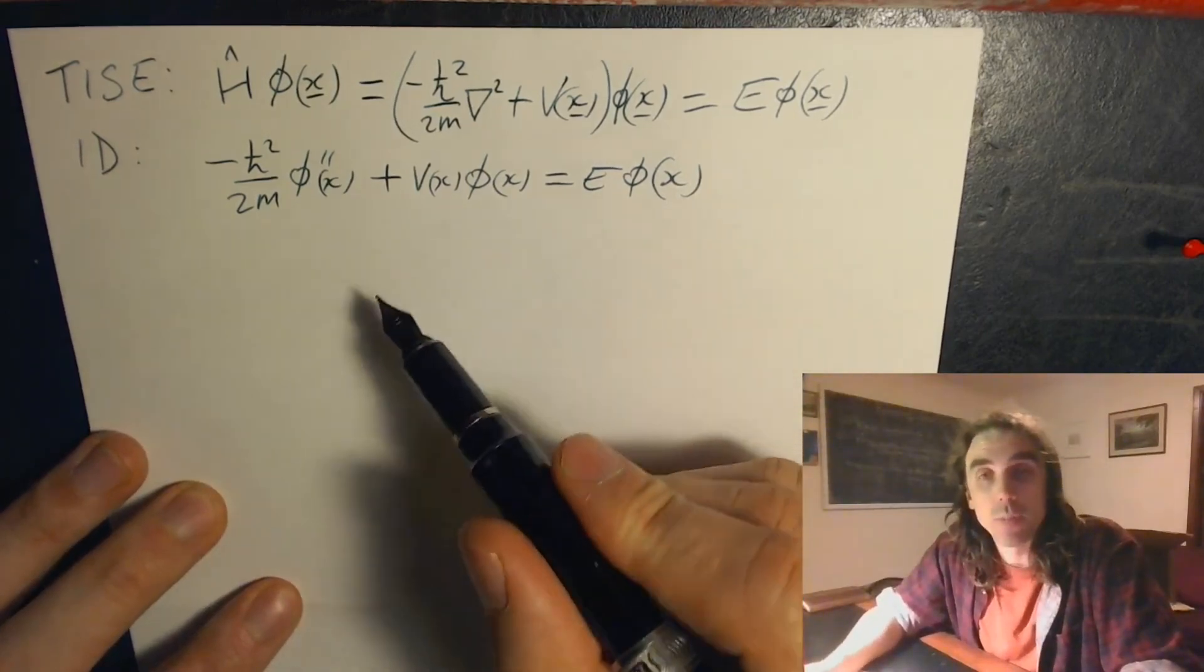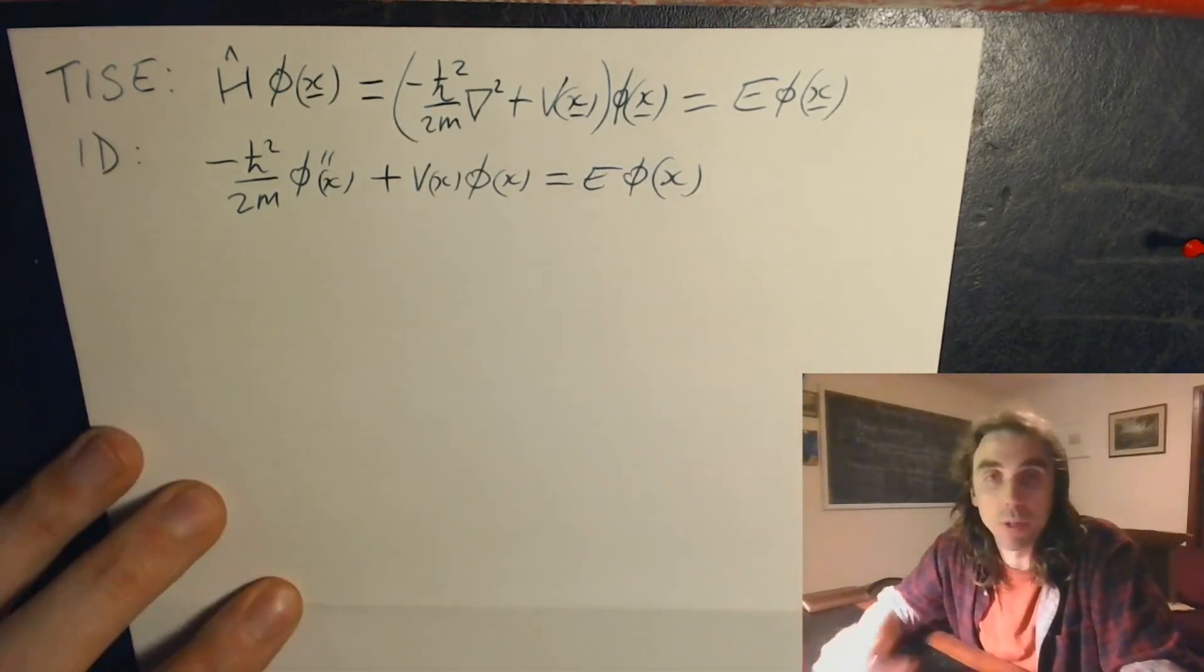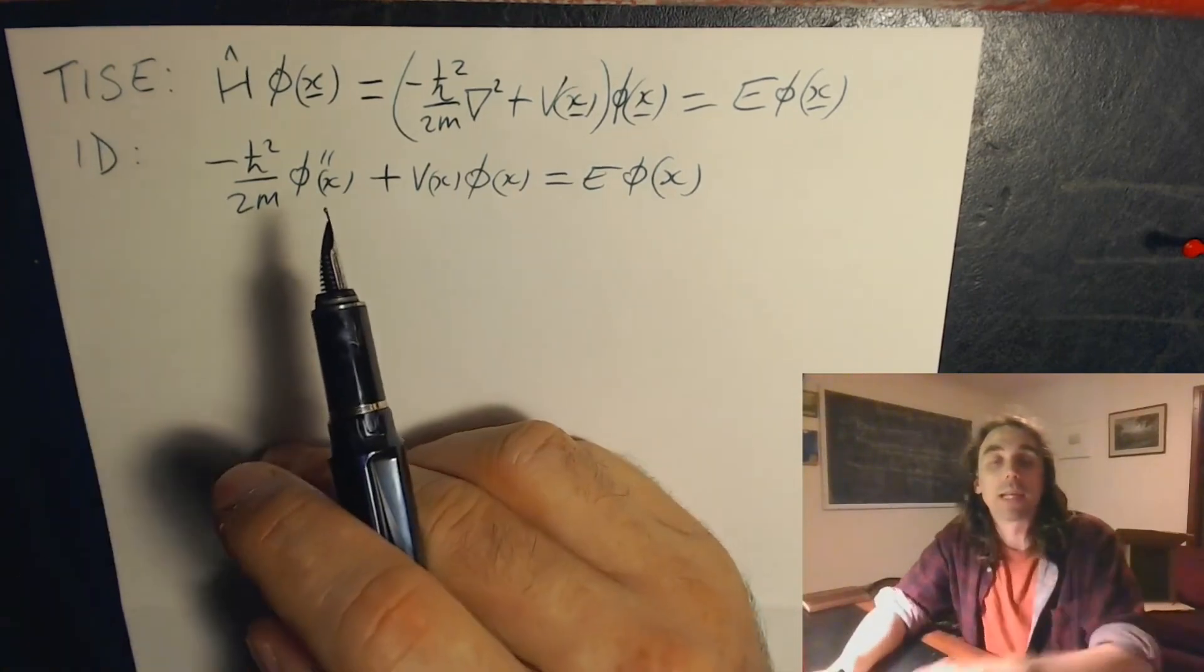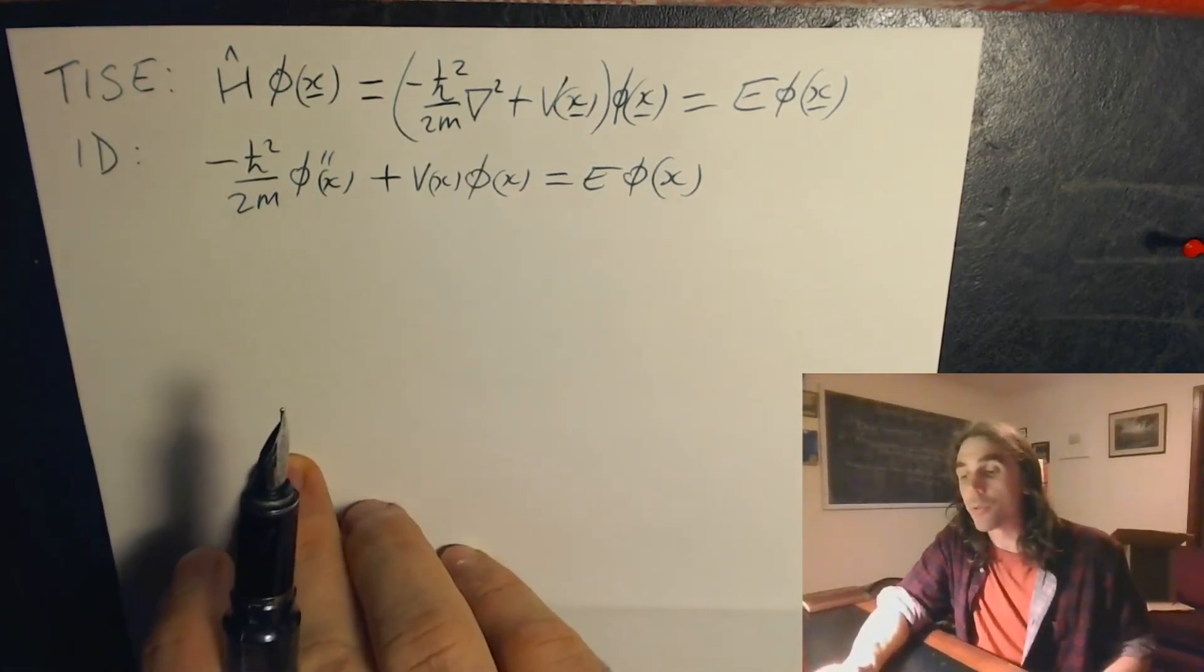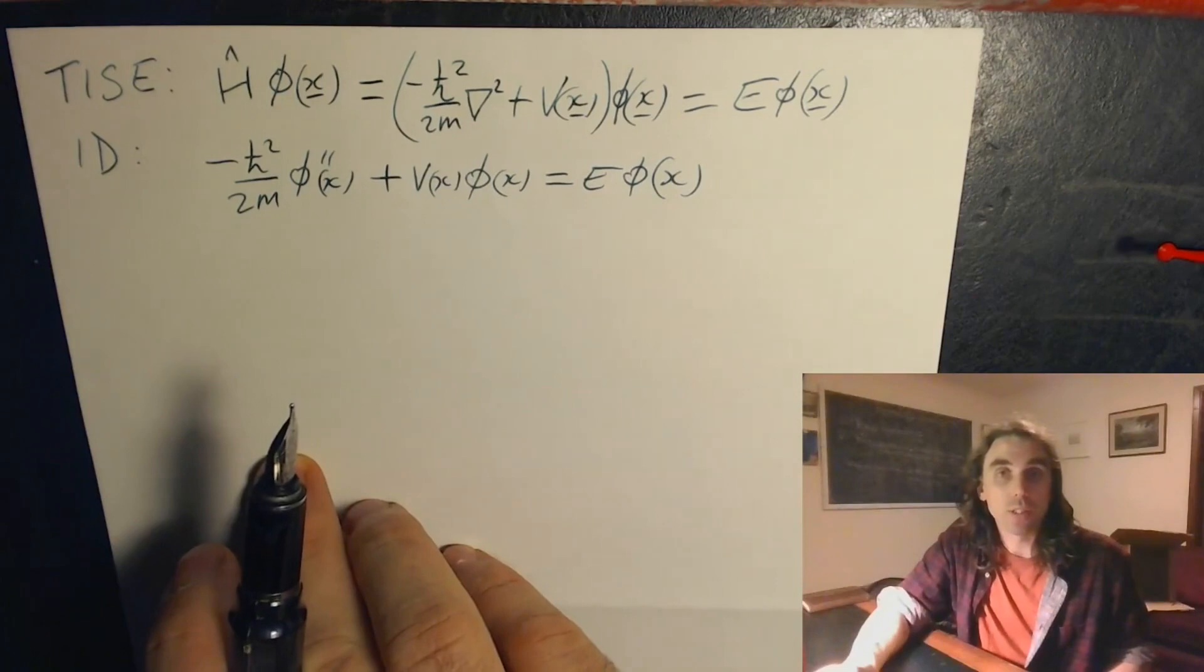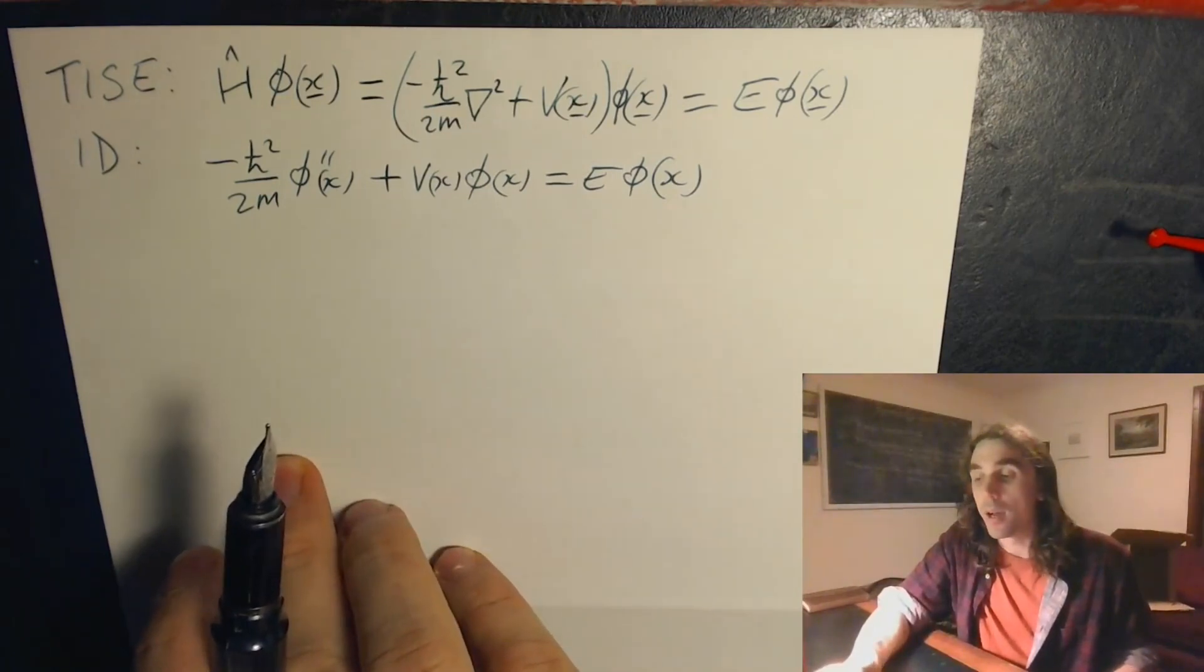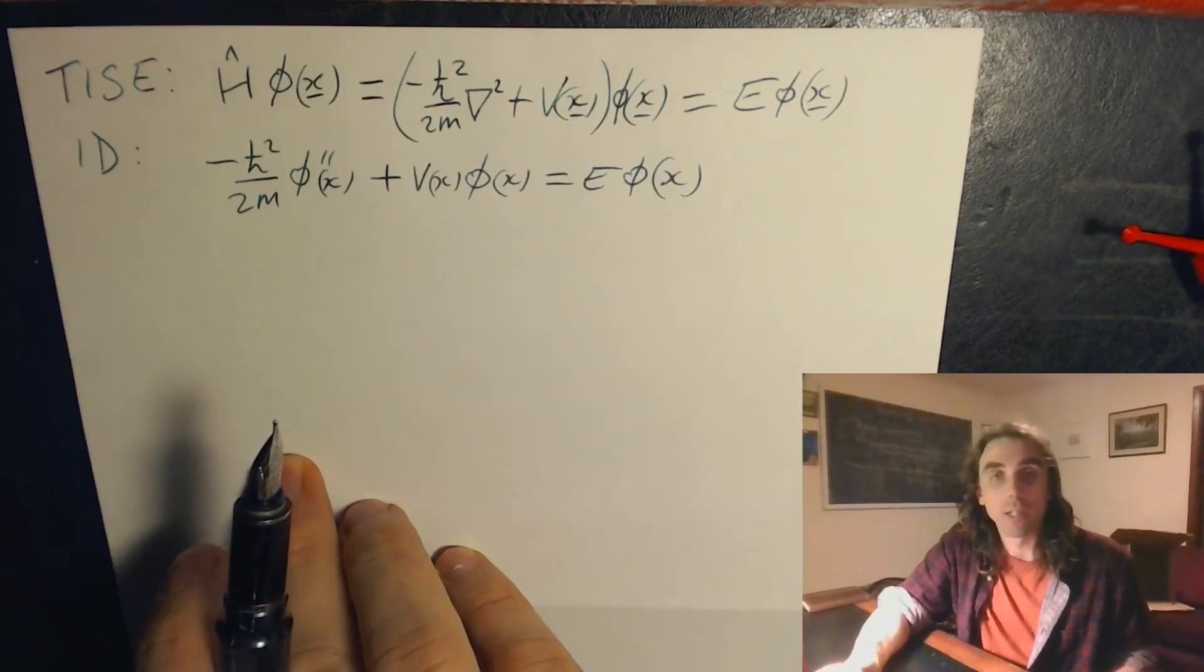In general, to specify such a problem, if we've got some physical system we want to model with quantum mechanics, we just write down a potential that encodes that system, and then we have to solve the time-independent Schrödinger equation for that potential subject to boundary conditions.